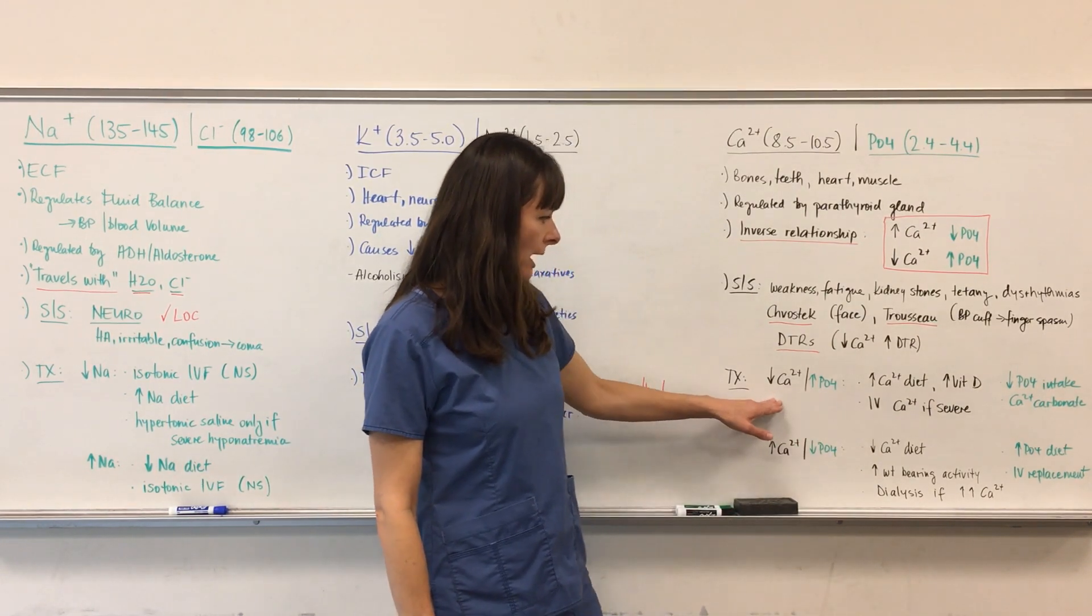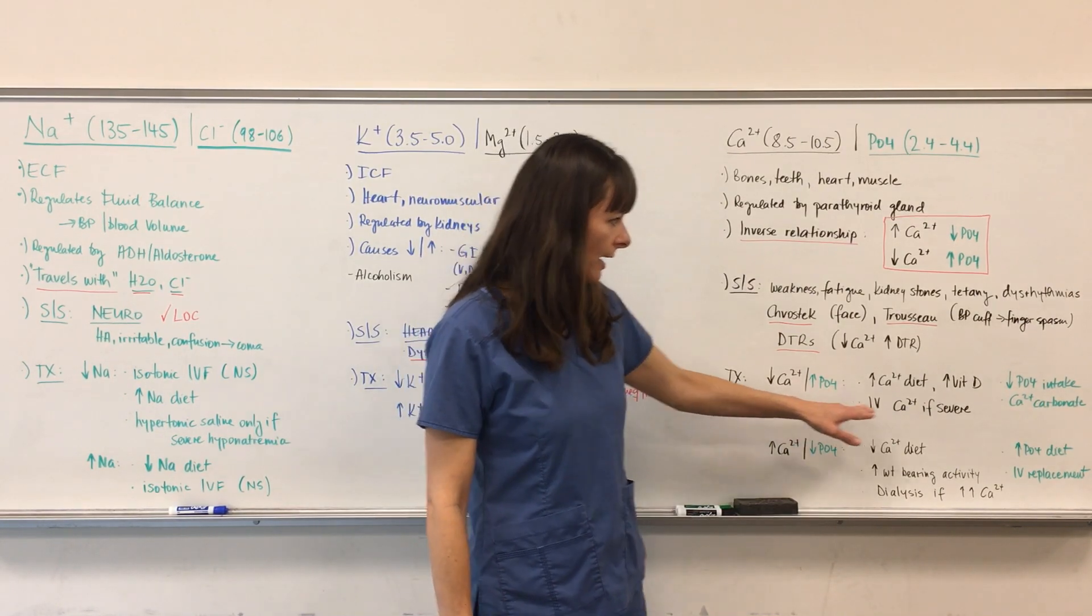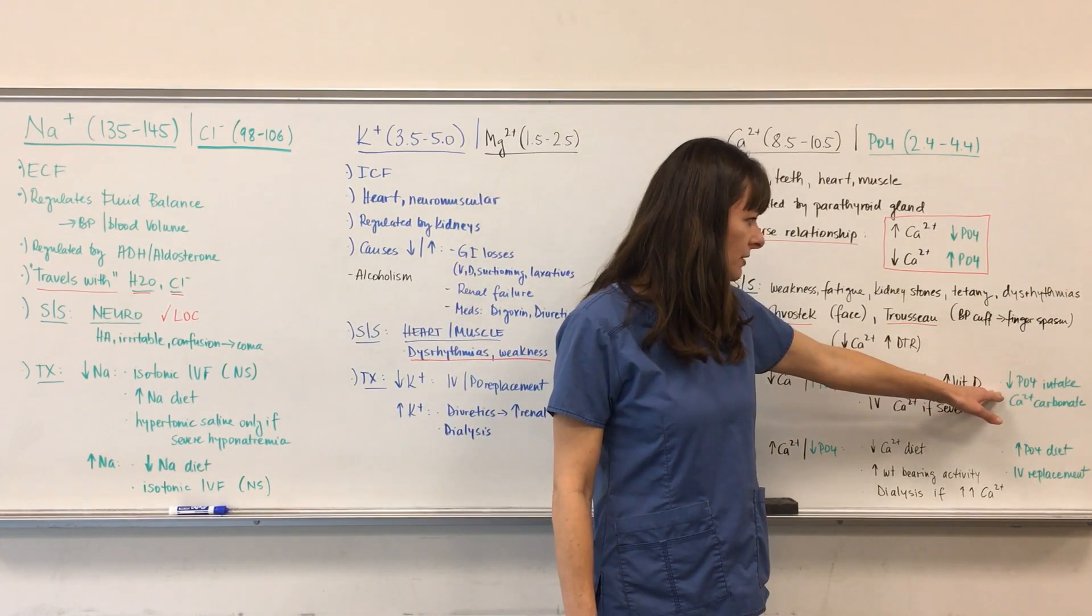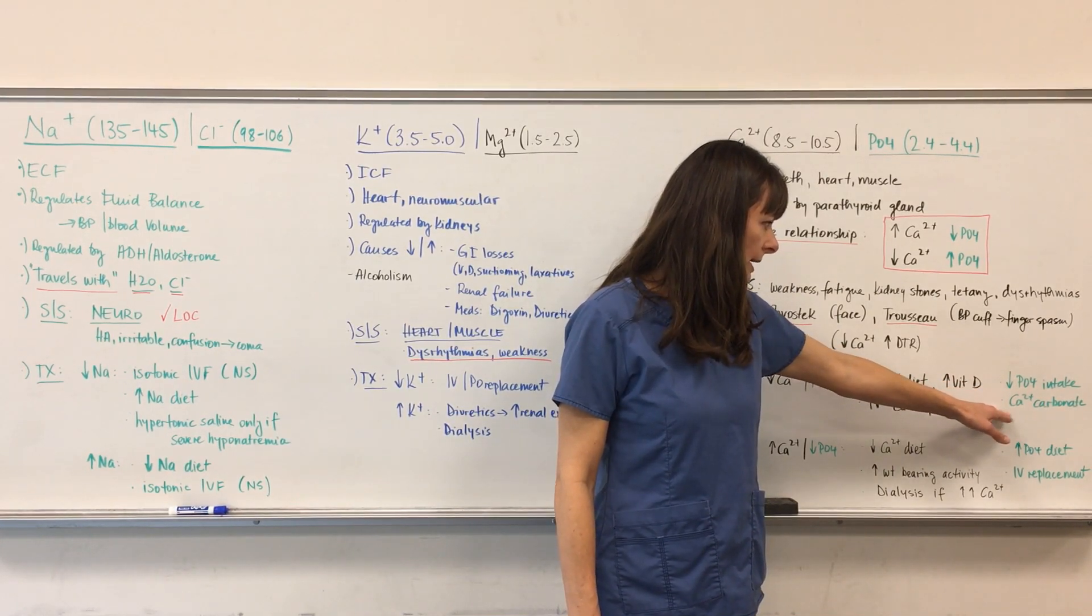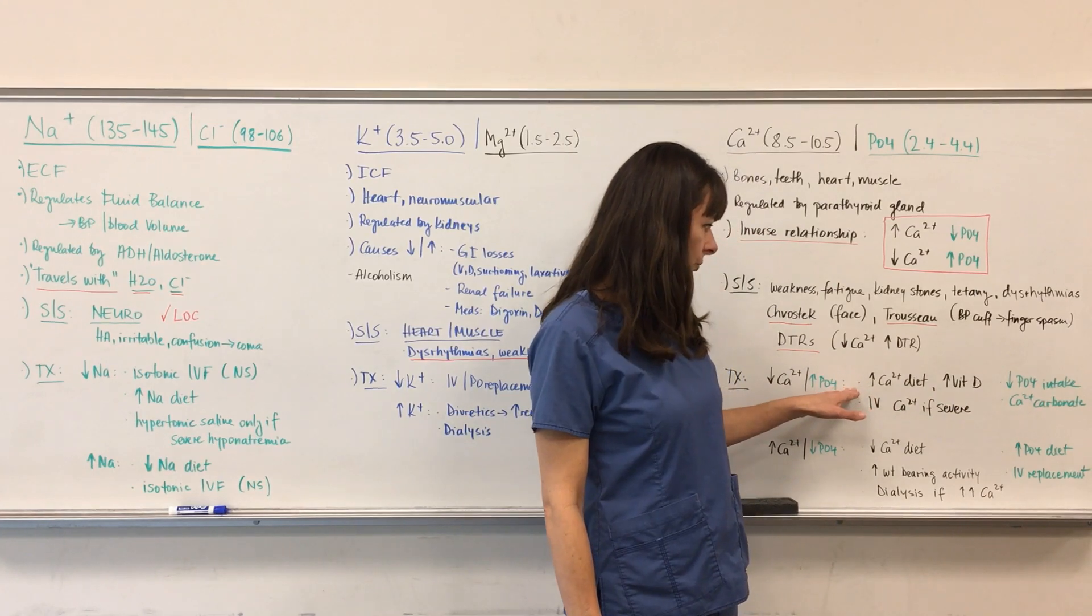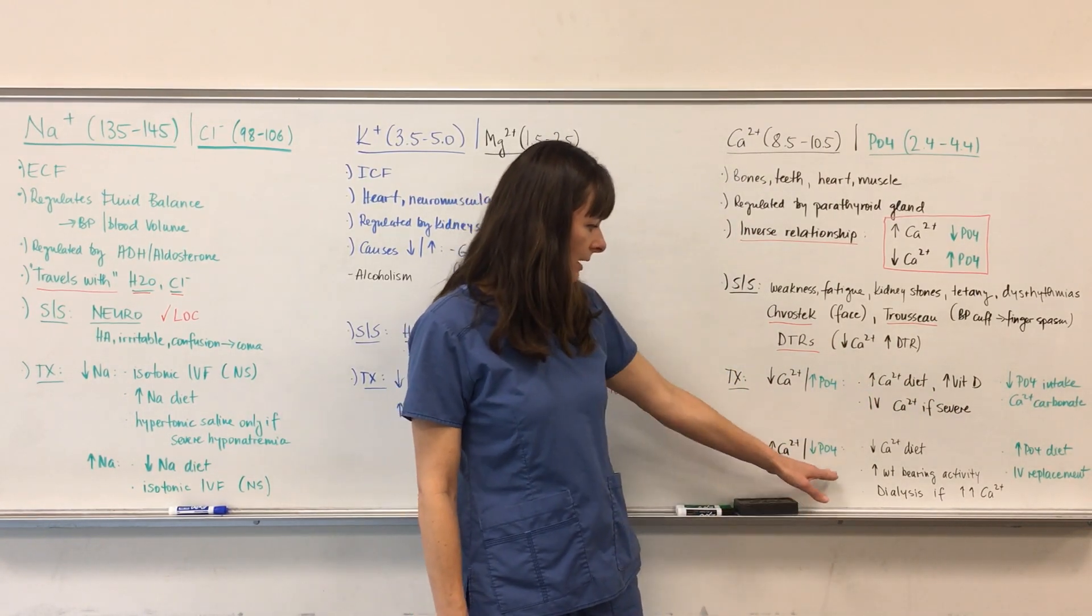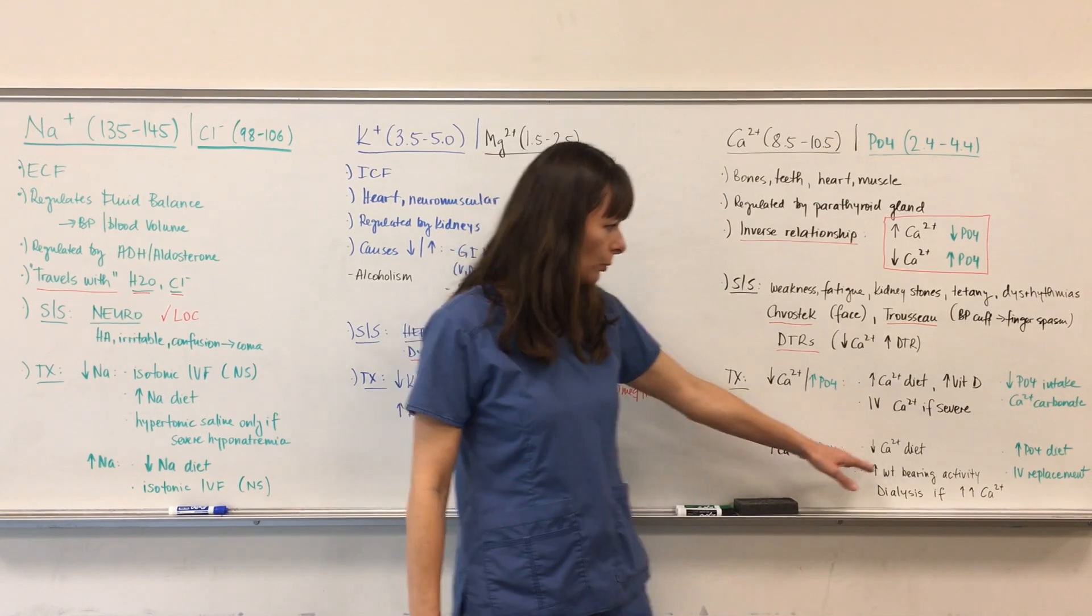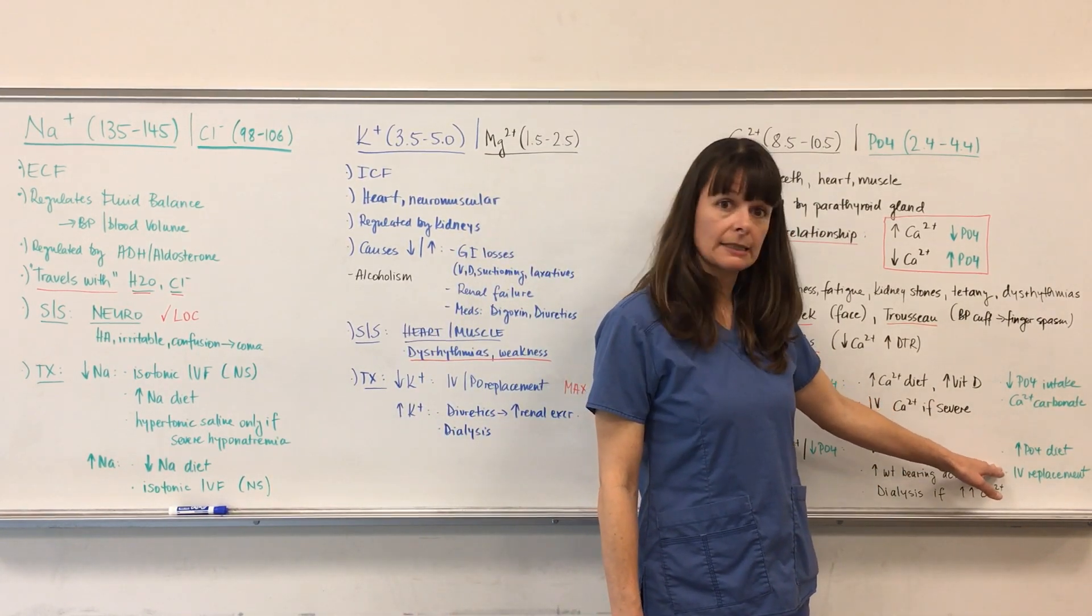For low calcium, which also means phosphate is high, we're going to limit phosphate intake and supplement the patient with calcium carbonate, which will also increase the calcium in their diet. If calcium is high, phosphate will be low, so we'll be increasing phosphate in their diet and maybe replace it in the IV.